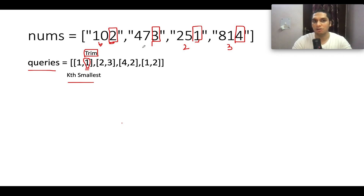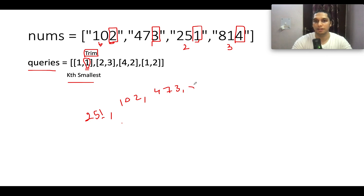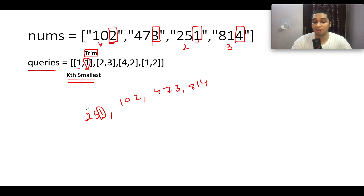After the sorting operation, the numbers are aligned as: 251 (rightmost digit 1 is the lowest), then 102 (digit 2), then 473 (digit 3), then 814 (digit 4). We sorted by the rightmost digit only. Now we look at the kth smallest — k equals 1, meaning we want the first smallest number, which is 251. It occurs at index 2 in the original array. So the answer corresponding to this query is 2.